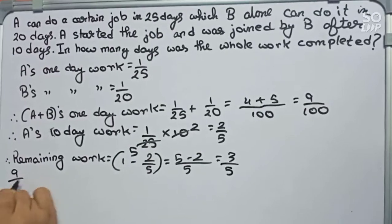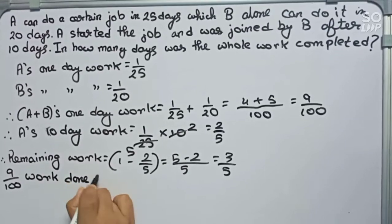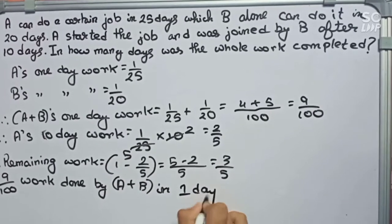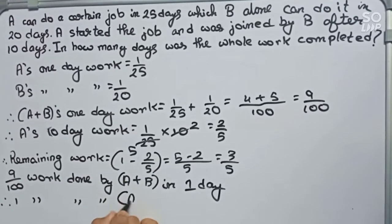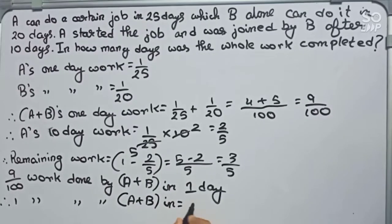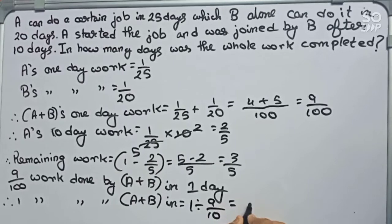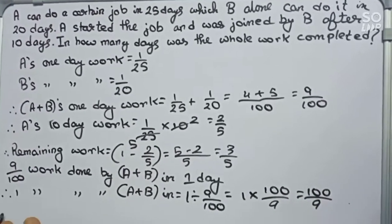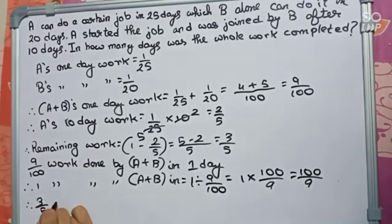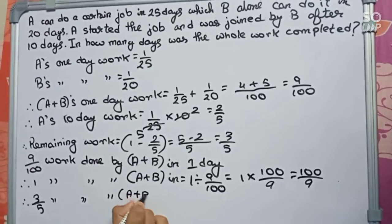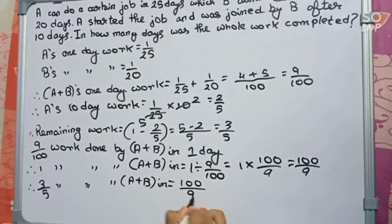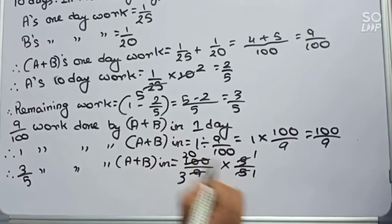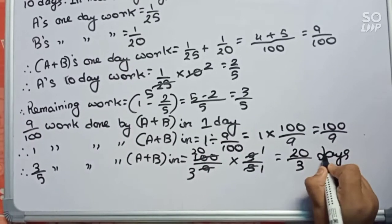Now we will frame the sentence like this: 9 by 100 work is done by A plus B in 1 day. Therefore, 1 work done by A plus B equals 1 divided by 9 by 100, which equals 1 into 100 by 9, which is 100 by 9 days. Now we will find 3 by 5, the remaining work done by A plus B: it becomes 100 by 9 into 3 by 5. We cut 3 and 9, which becomes 20 by 3 days.